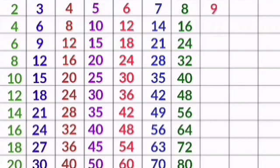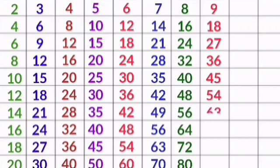9 1s are 9, 9 2s are 18, 9 3s are 27, 9 4s are 36, 9 5s are 45, 9 6s are 54, 9 7s are 63, 9 8s are 72, 9 9s are 81, 9 10s are 90.